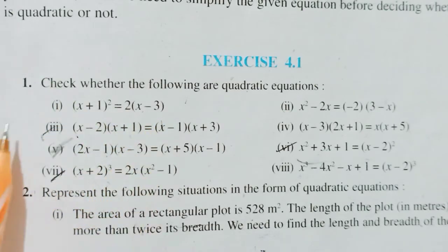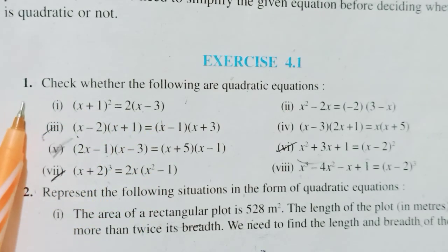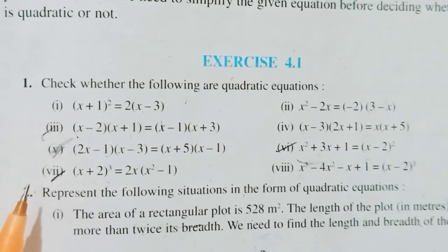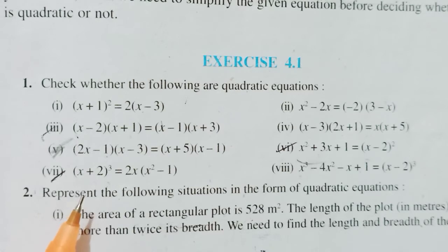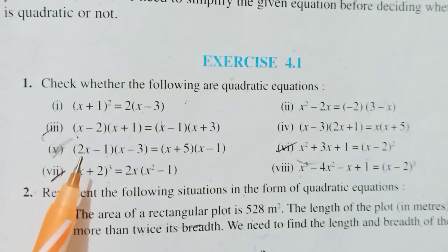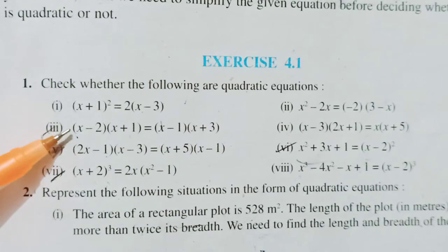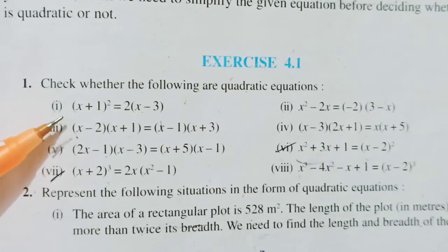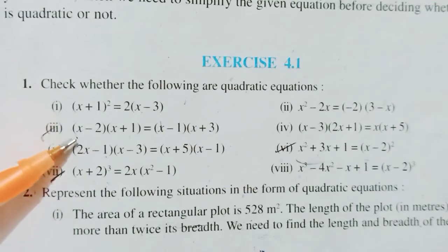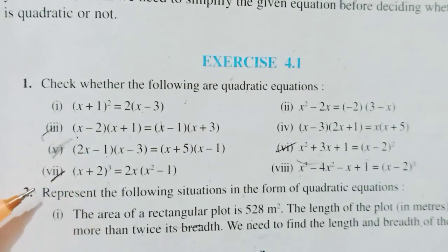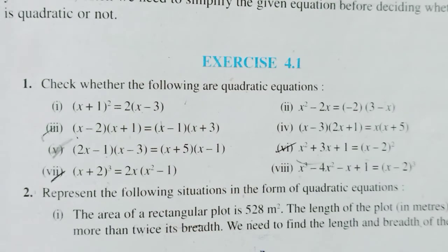Class 10 Exercise 4.1, Question 1: check whether the following are quadratic equations or not. A quadratic equation has the highest power of the variable as 2, and is of the form ax² + bx + c. Just by looking at the equations we won't be able to conclude — we need to simplify them to the maximum and then determine whether they are quadratic or not.